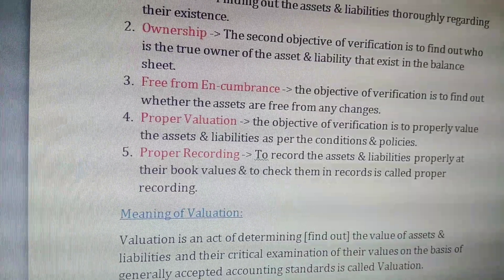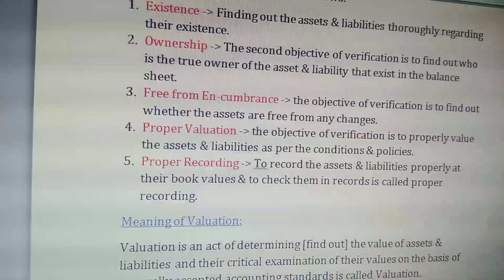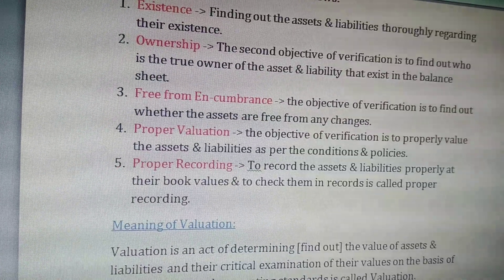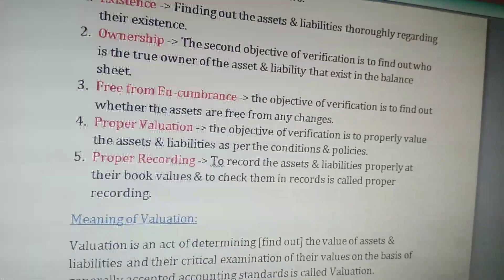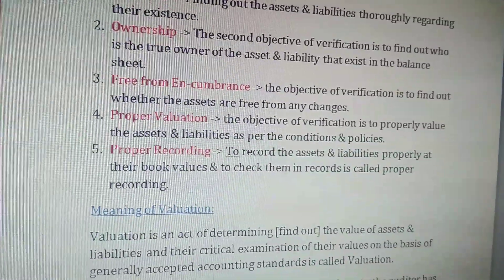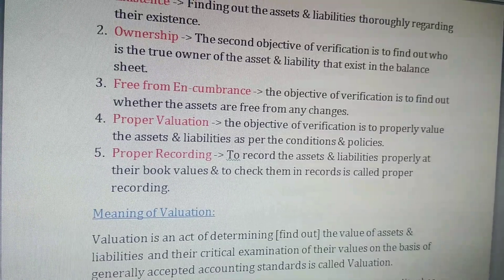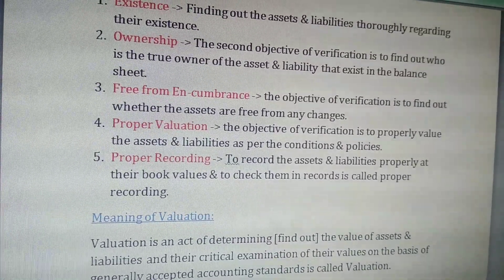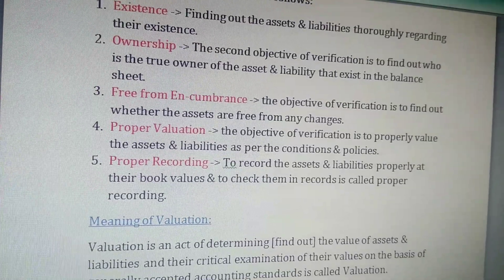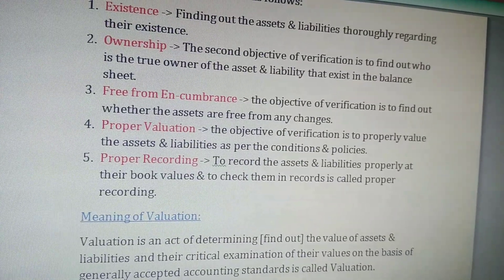The third objective is to check whether the asset or liability is free from encumbrances. Encumbrances means charges on the asset — for example, if an asset is pledged with a bank and a loan has been taken against it, that is an encumbrance. Verification is done to find out whether the asset or liability has any such charge or is free from any charge.